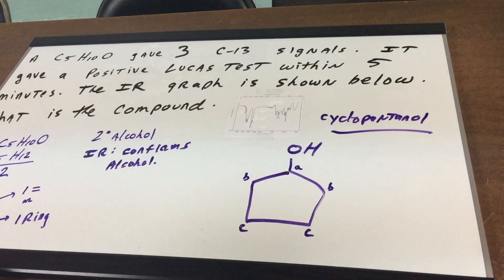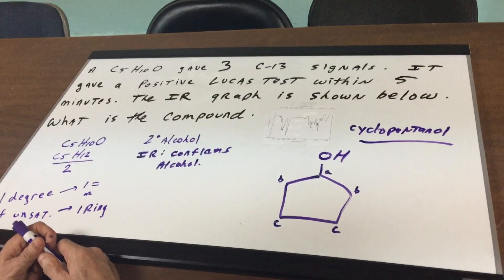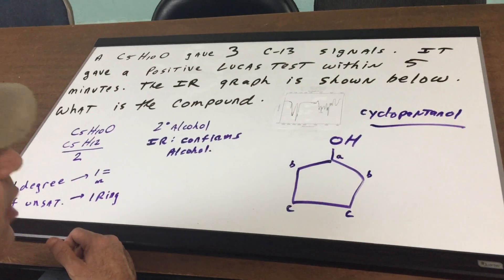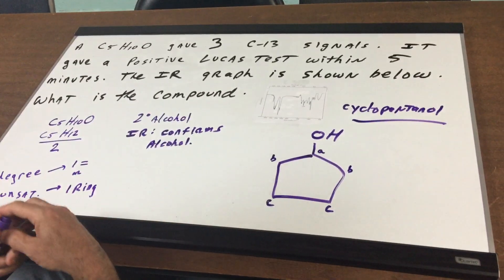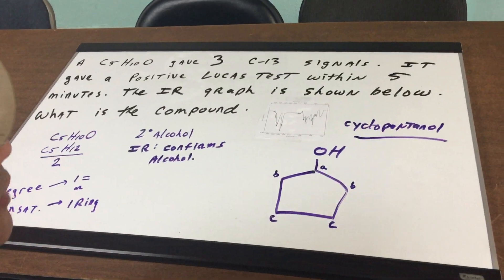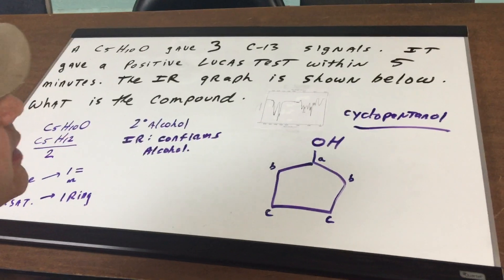I hope this helps and gives you a good understanding of how we go about doing a problem involving spectroscopy on an unknown. Spectroscopy combined with chemical tests is a great way to identify an unknown compound. Okay, good day to you, and I'll see you in study group.